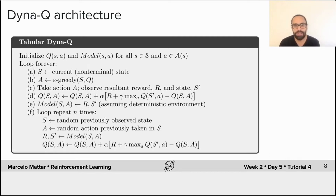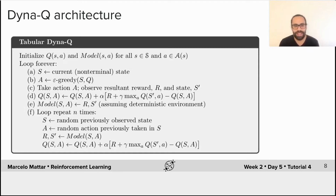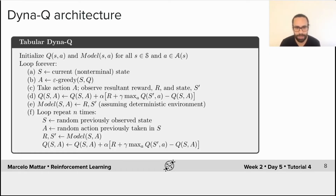In a nutshell, the DynaQ algorithm implements Q-learning in steps A through D. As shown in the table, the agent observes the state, chooses an action, takes the action and observes the result, and then learns from the outcome in step D. Then in step E, the agent learns the model — it simply saves and remembers what was the result of the action it executed. In step F, it implements planning: it loops n times, selecting a state and an action to simulate, draws the result from the model, and then learns from that simulated experience.